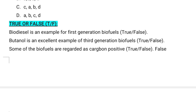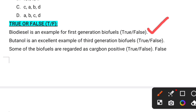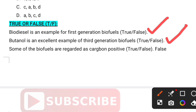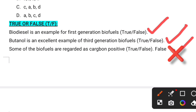The last category is true or false questions. Biodiesel is an example of first generation biofuels — this is a correct statement. Butanol is an excellent example of third generation biofuels — this is also correct. Some of the biofuels are regarded as carbon positive — this is a false statement, because they are carbon negative; that means they consume atmospheric carbon.